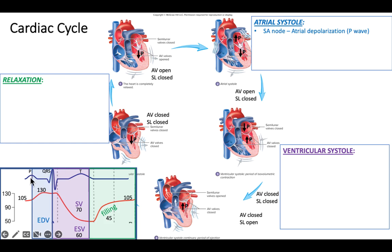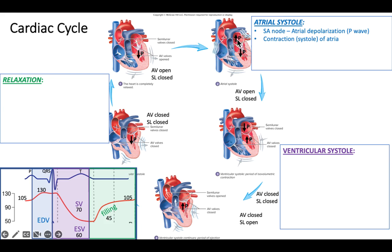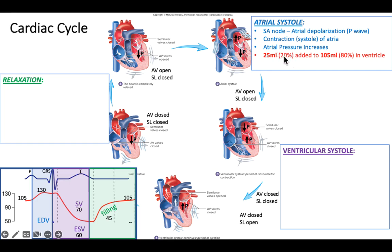We begin with the SA node firing, atrial depolarization, and the P-wave. After that, we get contraction or systole of the atria — that's the period called atrial systole. The atria contract after the P-wave. We can look at the picture of the heart and see the atria are indeed contracting. When they contract, the pressure inside those atria goes up. I've put a little arrow here representing the increase in atrial pressure in both atria. That pressure is going to allow us to add about 25 percent to the ventricle.